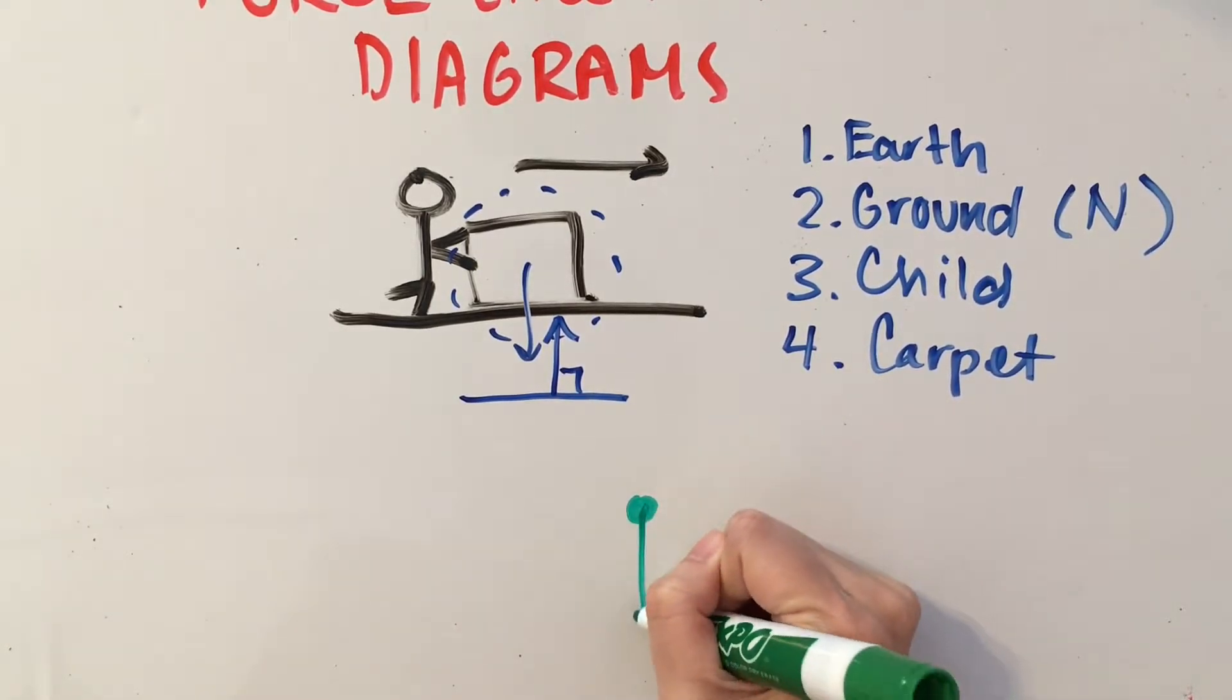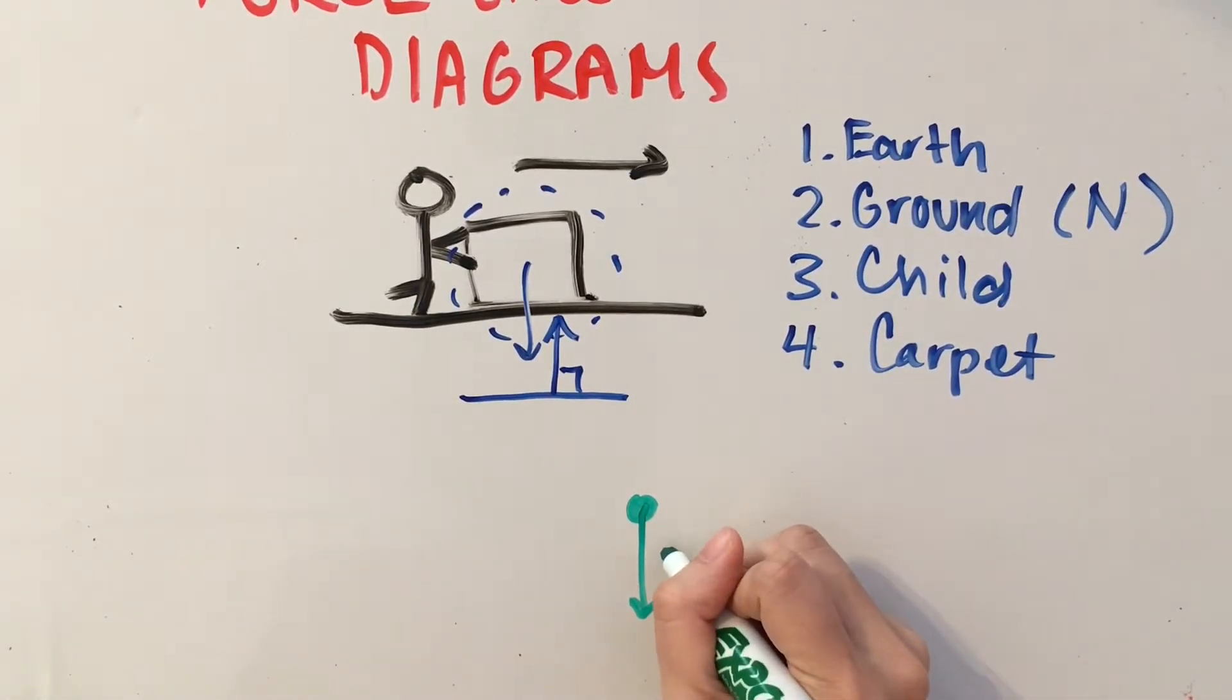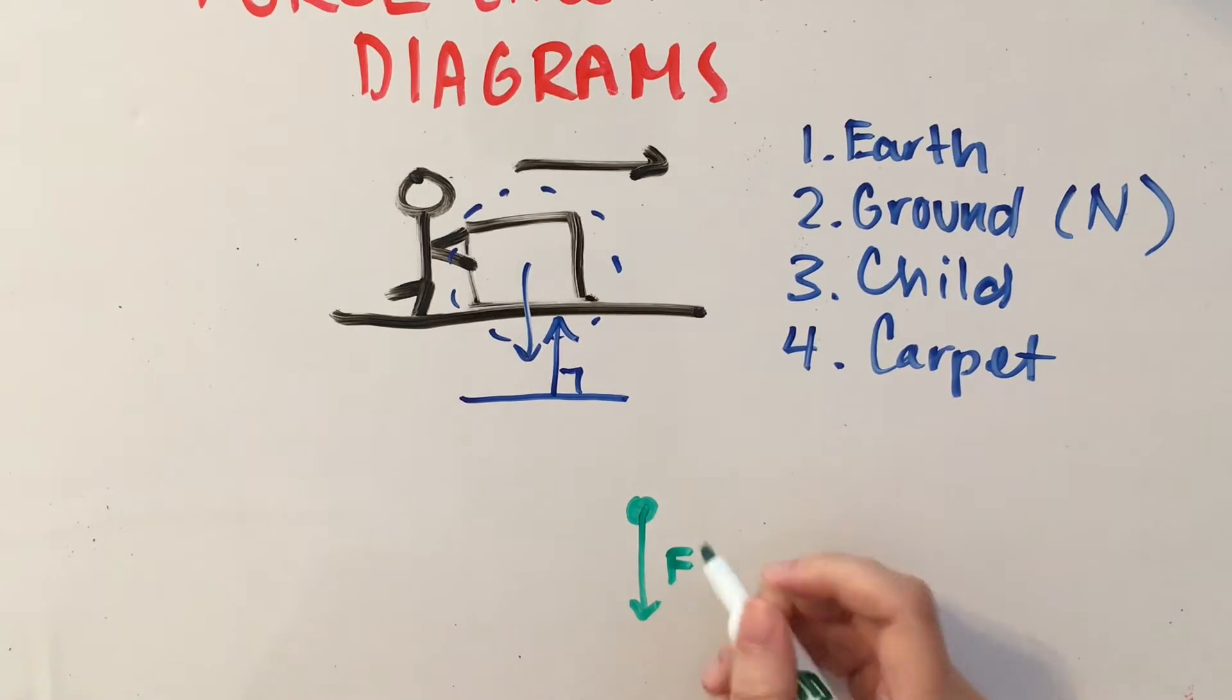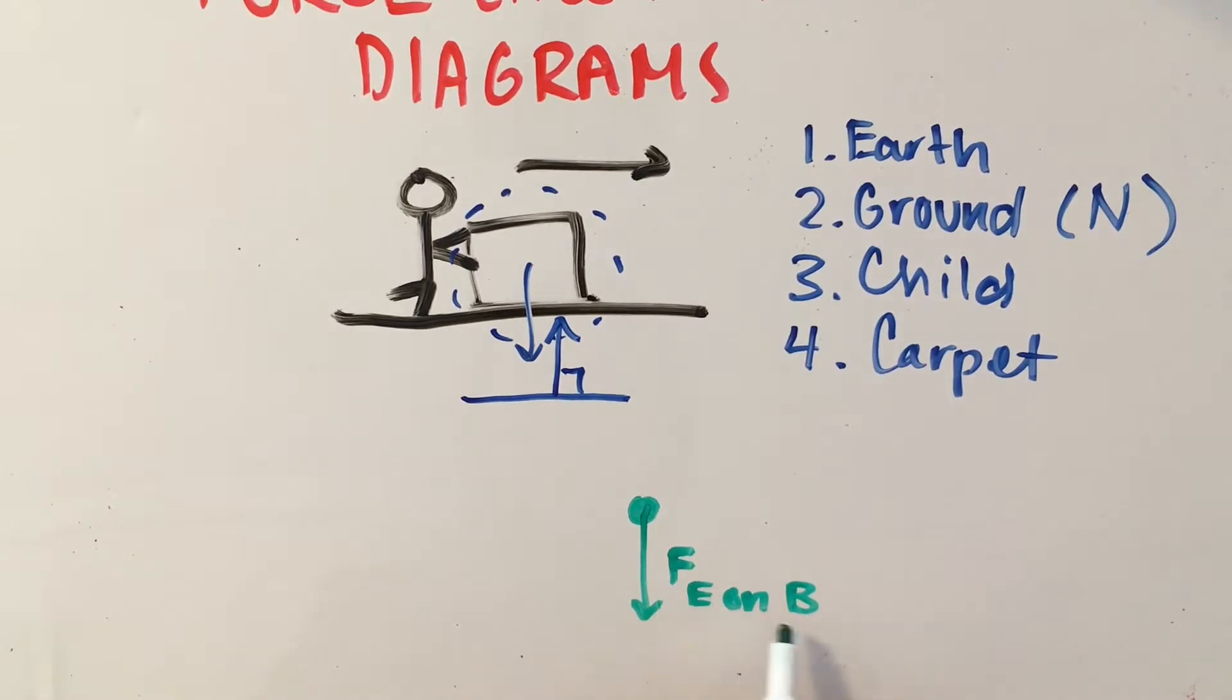We have our earth, which is going to be pulling downwards on the box. So we can label this force F sub E on the box, F sub E on B. And you can also write mg.